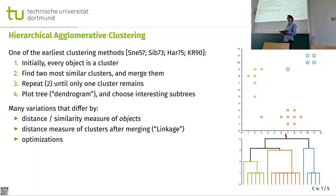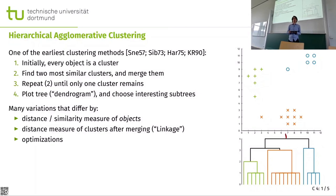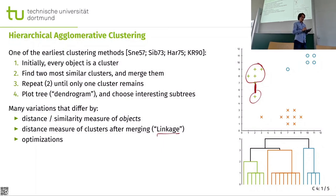The result looks like the phylogenetic trees you see in biology. We get this type of tree structure. We have to make a number of choices: we have to define how to measure the similarity of the points, and once we have a group of points and another group of points, how we define the distance between those two groups. That is called the linkage.